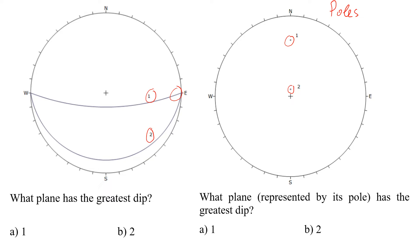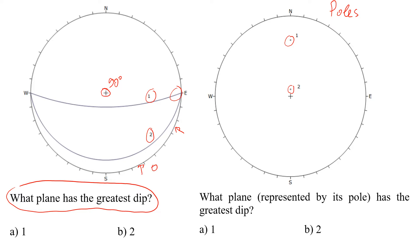On the left we have two great circles labeled 1 and 2, and on the right we have two poles also labeled 1 and 2. The question is: what plane has the greatest dip? Dip is the angle of a discontinuity. In the center of the circle the angle is highest — 90 degrees — and on the perimeter it's zero. So if the great circle is close to the center, like case number one, that discontinuity will have a great dip. The answer is A, because great circle 1 is very close to the center compared to great circle 2.